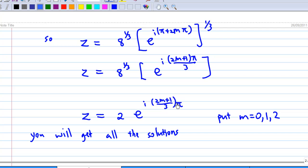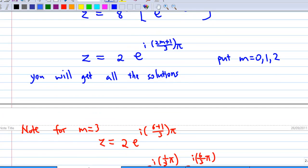So you can put the value of m equal to 0, 1 and 2. You'll get all the solutions. Now it is not necessary to put m equal to 3, 4 and 5 because the solution will just repeat. This is the illustration.